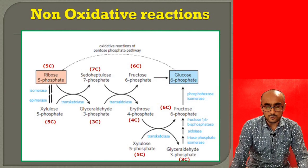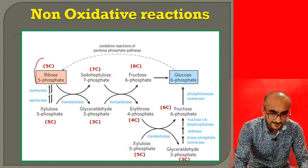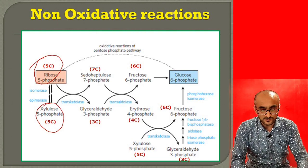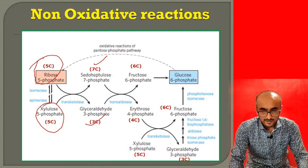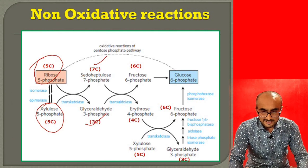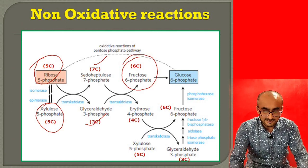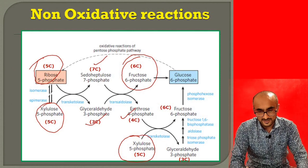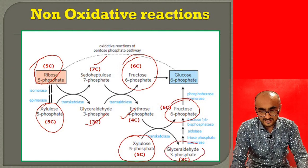Summarizing the non-oxidative reactions: five-carbon ribose-5-phosphate reacts with five-carbon xylulose-5-phosphate to form a seven-carbon sugar and a three-carbon sugar. These are acted upon by transaldolase to release the six-carbon fructose-6-phosphate, while the leftover four-carbon erythrose-4-phosphate reacts with another xylulose-5-phosphate to give rise to another fructose-6-phosphate and glyceraldehyde-3-phosphate.